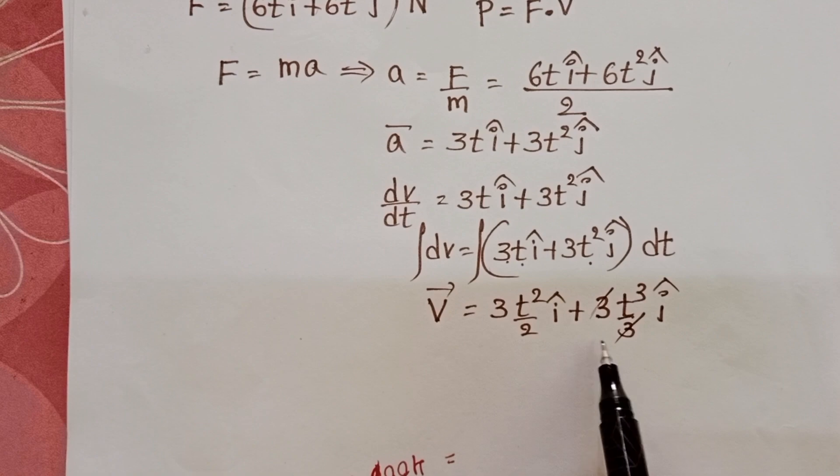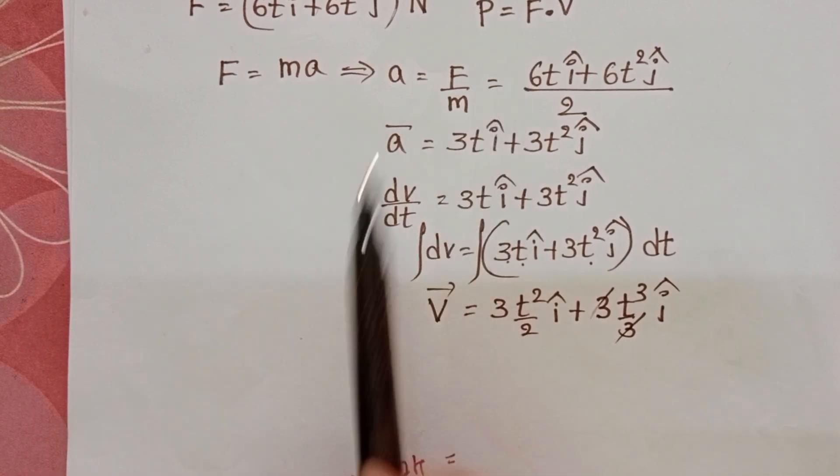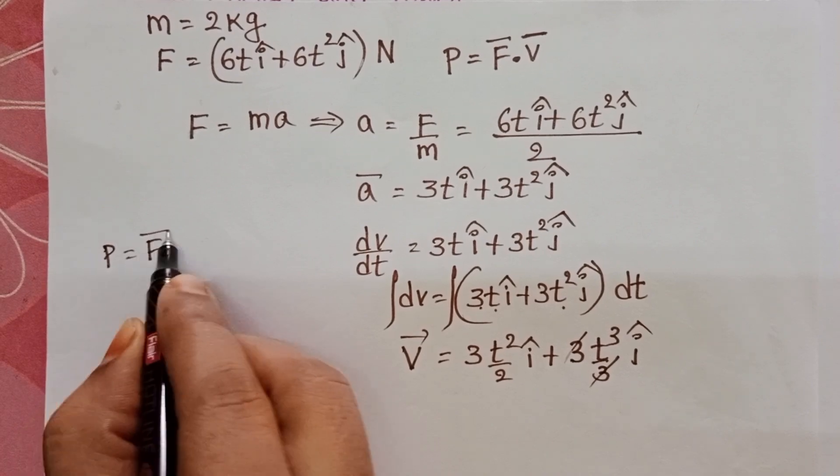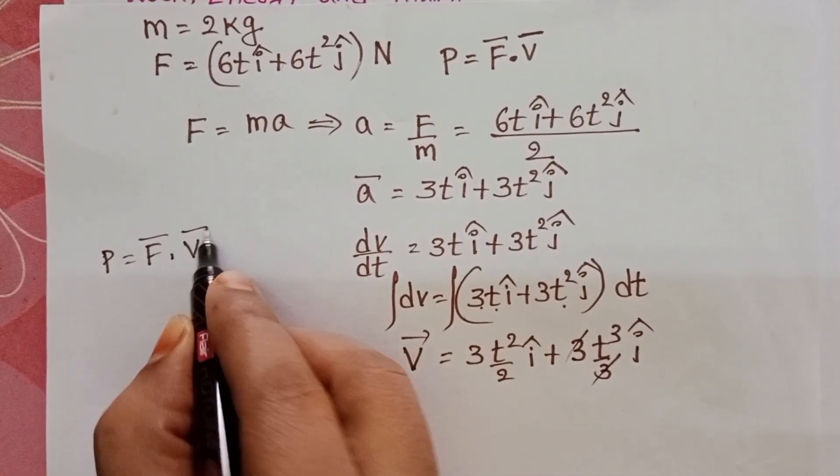Now we know the velocity vector and the force vector. Now we find the power. Power equals the dot product of force and velocity.